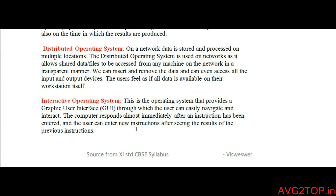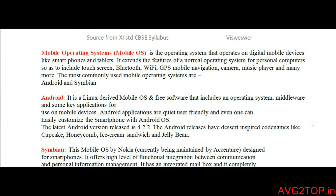Interactive operating system especially works with a graphical user interface (GUI). This makes it easy to navigate and interact with the user. For example, a computer beginner sitting with a computer — the GUI acts as an intermediate between the computer and the user, giving instructions so the user can learn based on the results they see. The interactive OS is the right choice for such users.